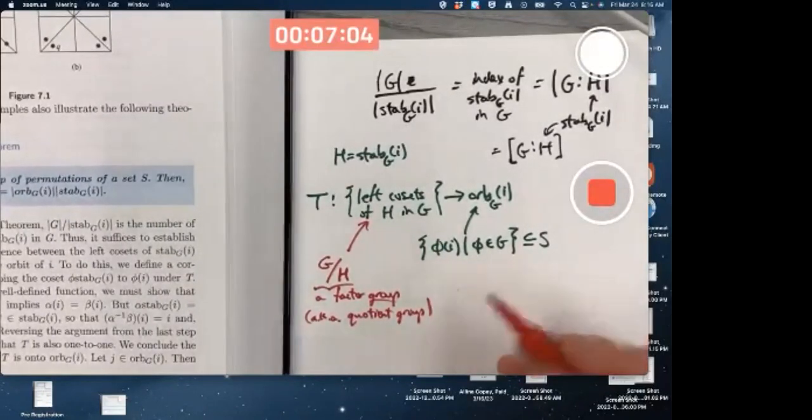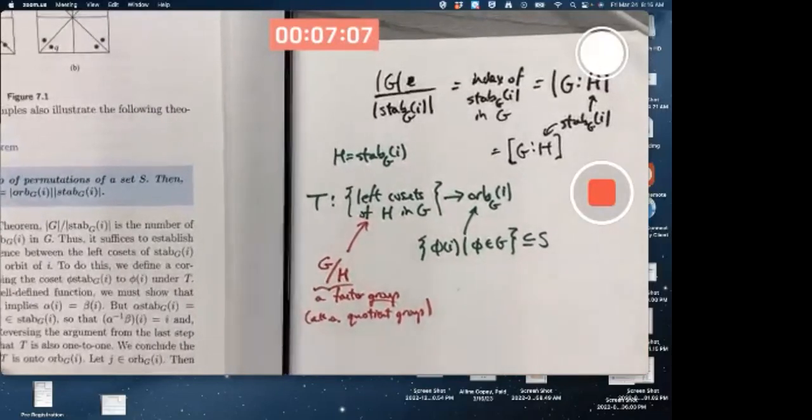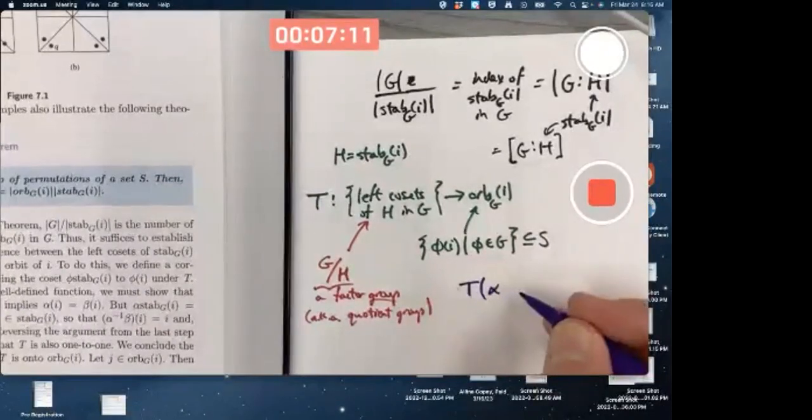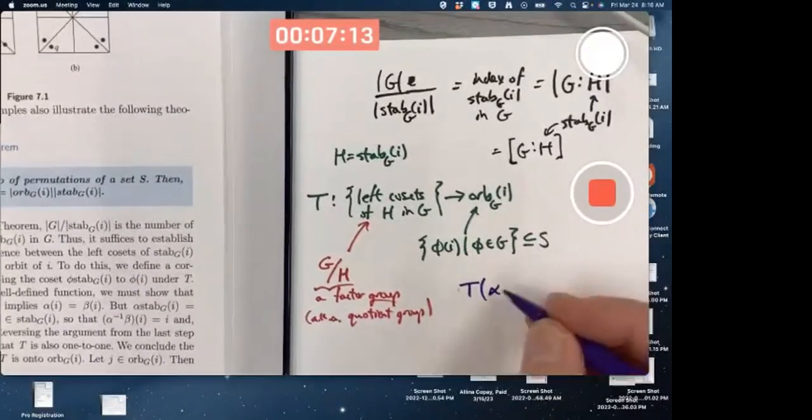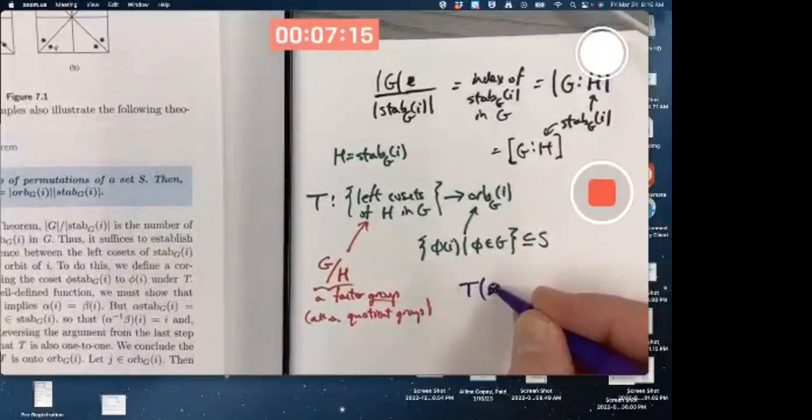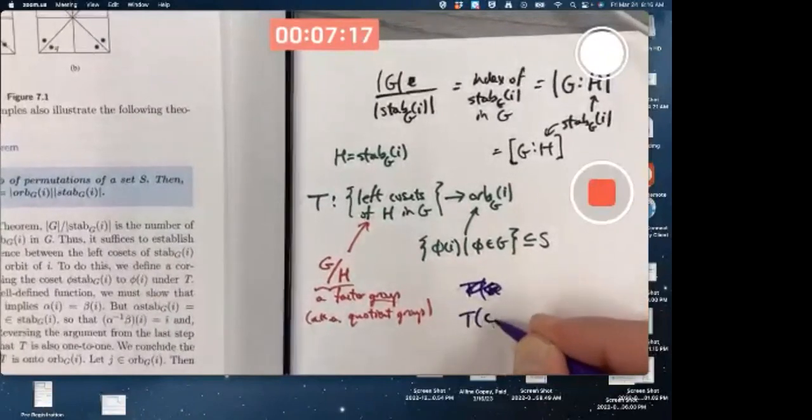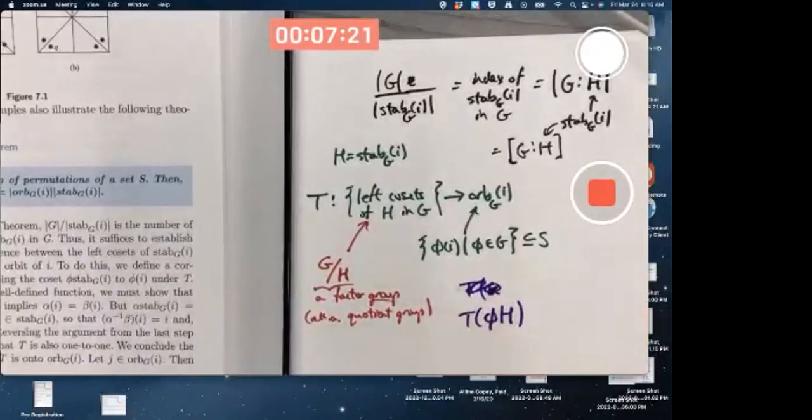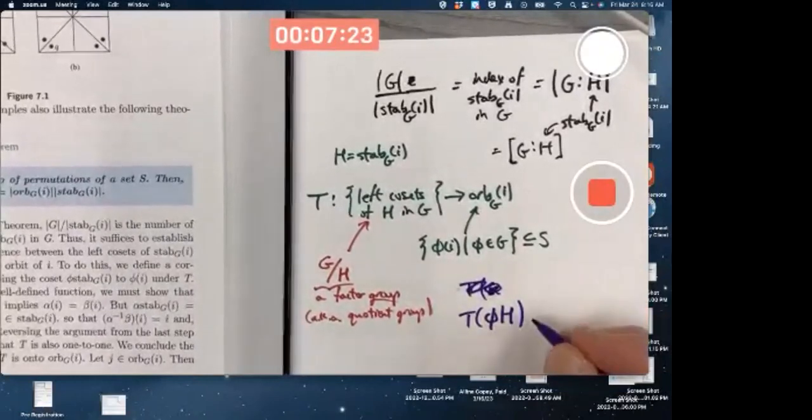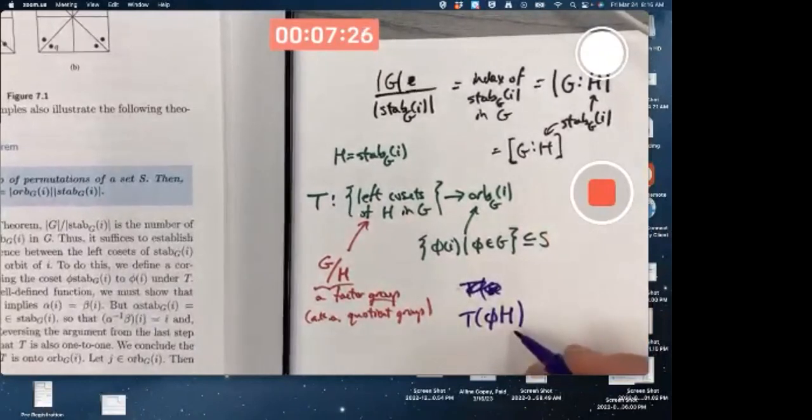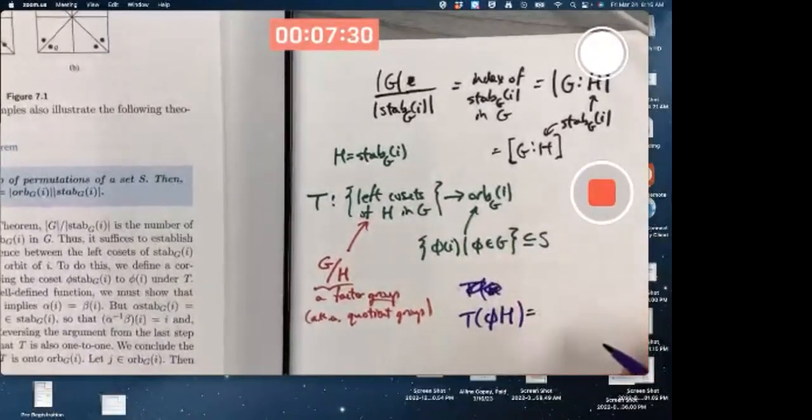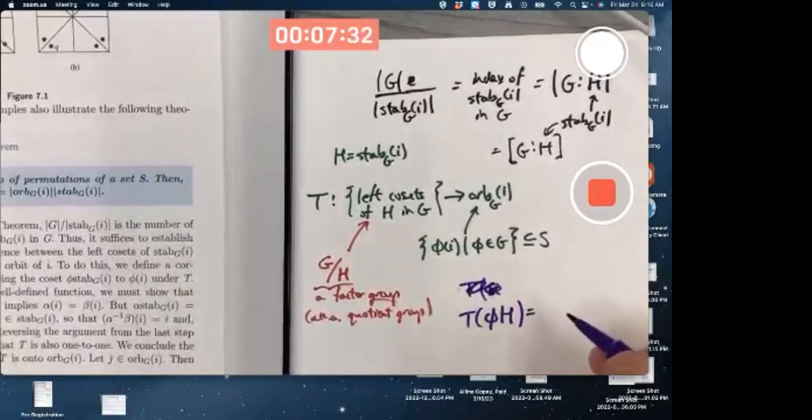And the formula here for T is that it's taking your arbitrary coset, T of, I guess I'll use the book's notation, T of phi H, where again, H is the stabilizer. We want to map it, this left coset, onto a unique element of the orbit.